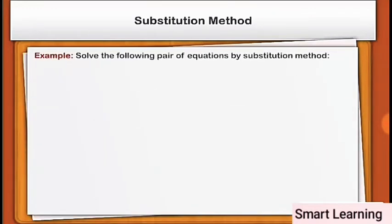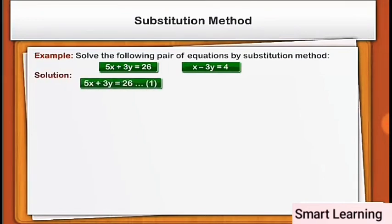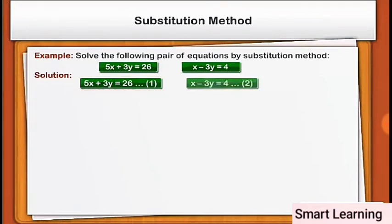Substitution method is the method of solving the system of equations wherein one of the equations is solved for one variable in terms of the other variables. We shall explain the method of substitution by taking some examples. Solve the following pair of equations by substitution method: 5x + 3y = 26 and x − 3y = 4.